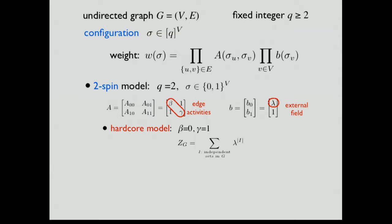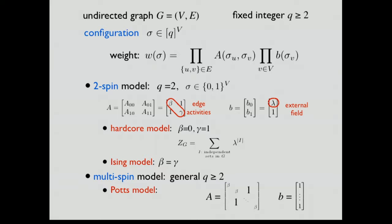When beta equals gamma, it is the Ising model. For general Q, the multi-spin model, when the interaction matrix takes a particular form, it is the Potts model.